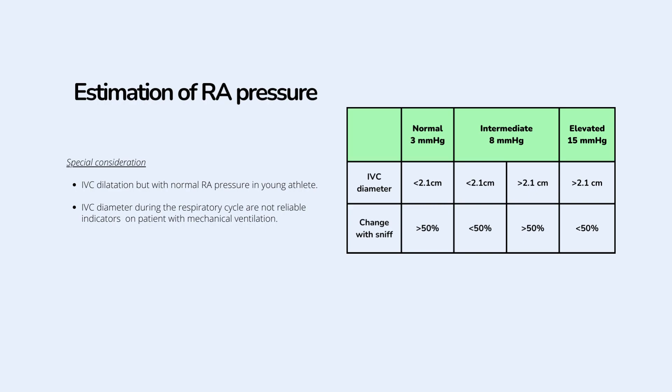There are some special considerations. In some cases in young athletes where IVC diameter is dilated, the RA pressure is normal. Another consideration is that this method for measuring RA pressure is not accurate for patients on mechanical ventilation.